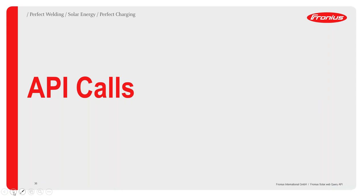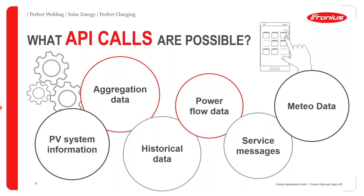The possible API calls include: PV system information, communication data, historical data, power flow data, service messages, and meteor data — which refers to any weather data such as today's weather conditions.